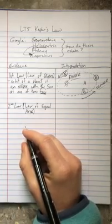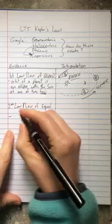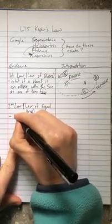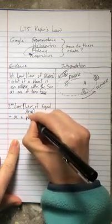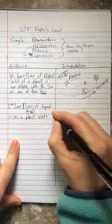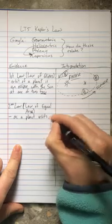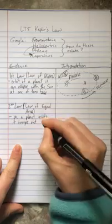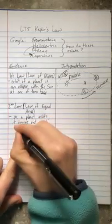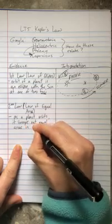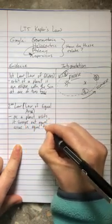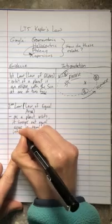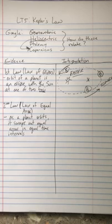And we're going to write it almost word for word from that gizmo. It says that as a planet orbits, it sweeps out equal areas in equal time intervals. So as a planet orbits, it sweeps out equal areas in equal time intervals.